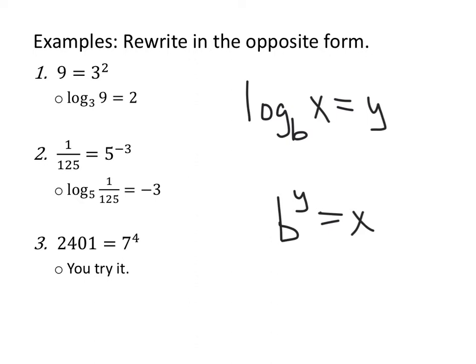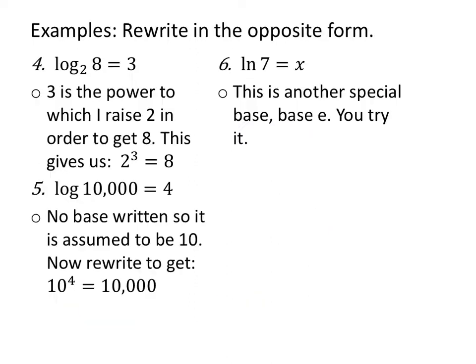How about you give this one a shot? 2,401 equals 7 to the fourth power. Pause and see what you can do. Now we bring it back together: 4 is the power — all the log is is a power — to which I raise 7 in order to get 2,401. Great job. Rewrite in the opposite form: log base 2 of 8 equals 3. I remind myself that 3 is the logarithm, so 3 is the power to which I raise 2 in order to get 8.